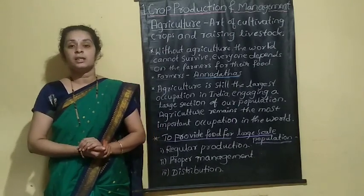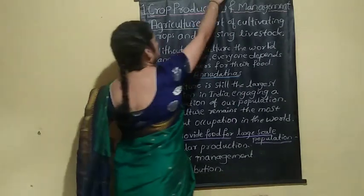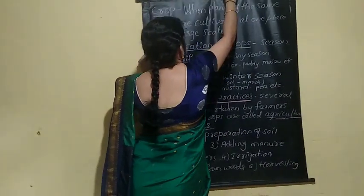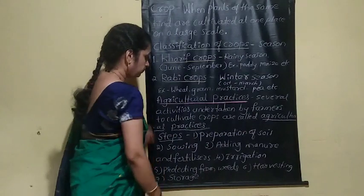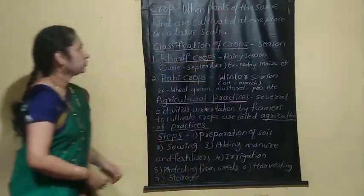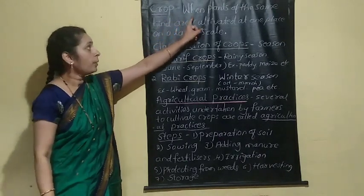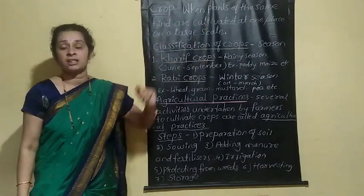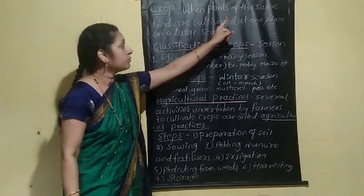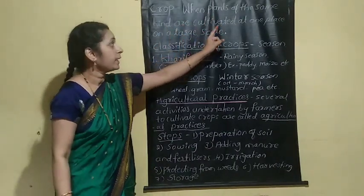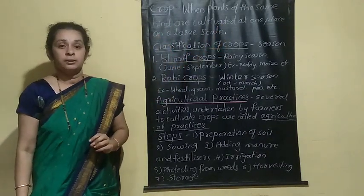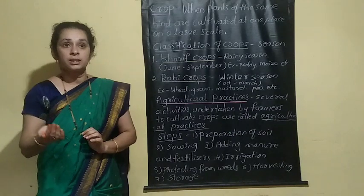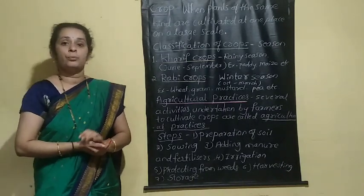Next we will discuss what a crop is. A crop means when plants of the same kind are cultivated at one place on a large scale. For example, if wheat plants are grown in one place on a large scale, then it is called a wheat crop.